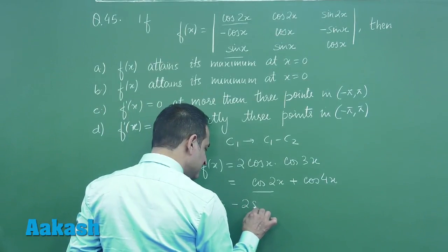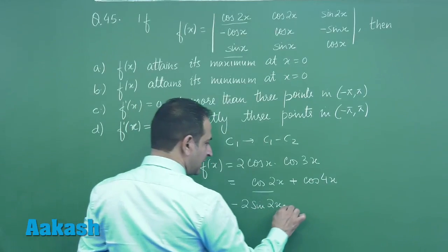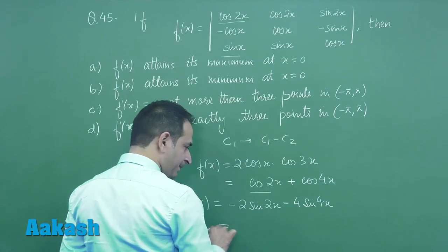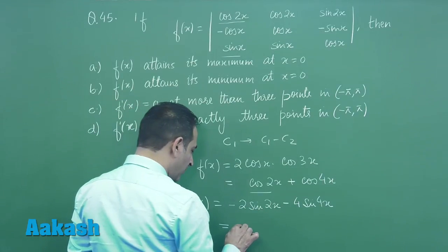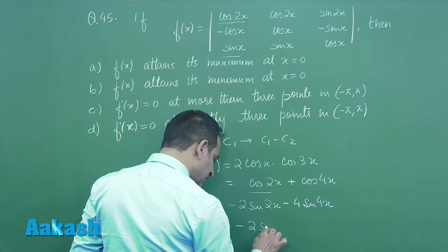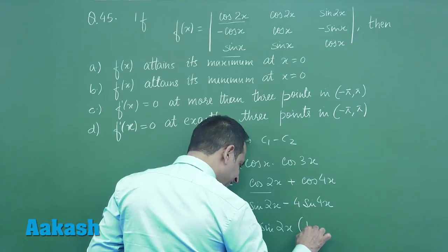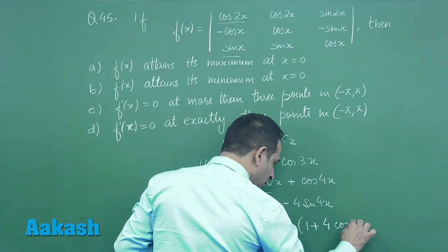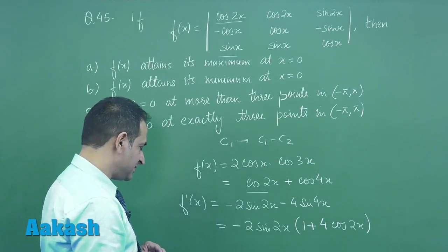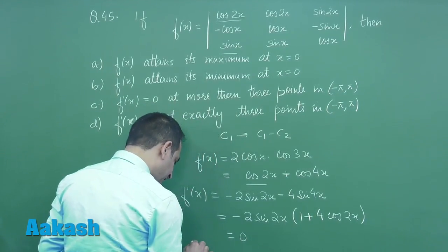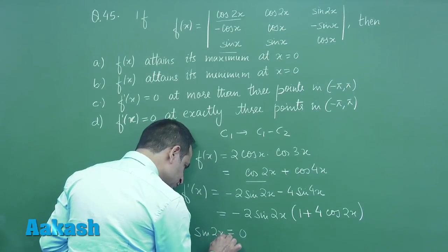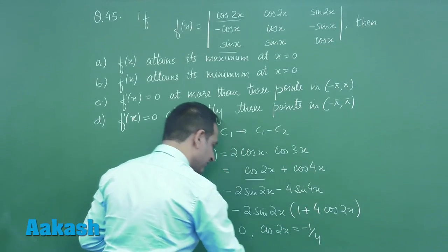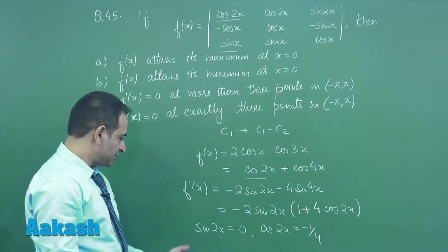...minus 2 sin 2x and minus 4 sin 4x. Now from here we can take common minus 2 sin 2x, and here we will have 1 plus 4 cos 2x. Now setting this to 0 we have sin 2x equal to 0 and cos 2x equal to minus 1 by 4.